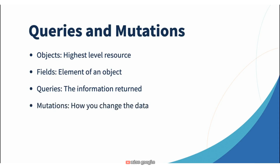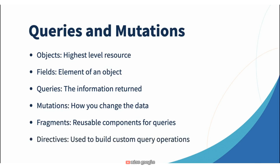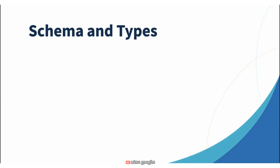Queries have variables in them that allow you to specify specific objects you want returned, and they can be as simple as an ID or as complex as the value in a type. Mutations are how you change the data — when working with systems, we have to manipulate the data and not just query it, and mutations are how you manipulate the data stored in the backing data source. Fragments allow you to build reusable components for your queries in the same way we would in Java OOP. Directives allow you to build custom query operations. GraphQL is based on a schema, and that schema defines all of the objects, queries, and mutations.